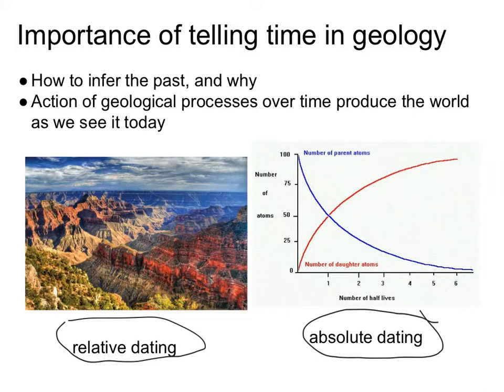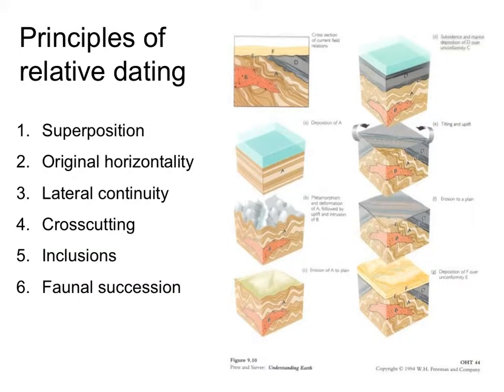The youngest layers in the Grand Canyon are only about a couple hundred million years old. That's the time range we're talking about, and it's absolute dating techniques that allow us to make those calculations. There are actually a number of different principles that can be used to determine the sequence of events that occurred to create a particular landscape. This idea of younger things being put down on top of older things is the principal idea of superposition.